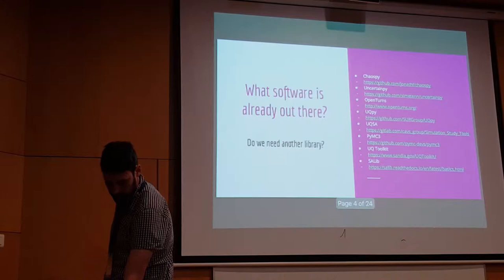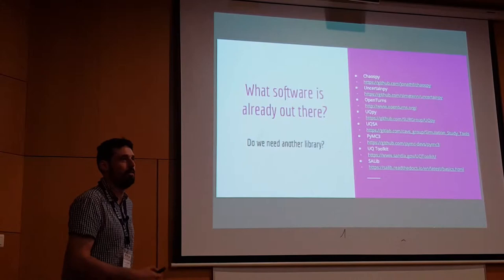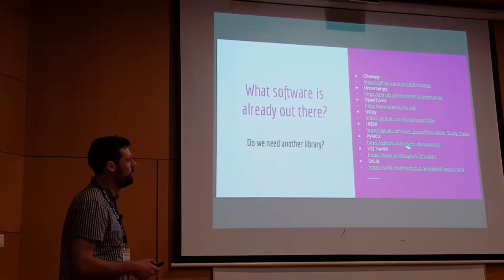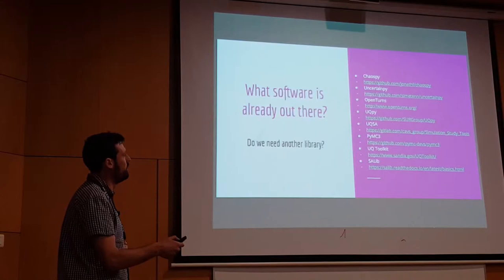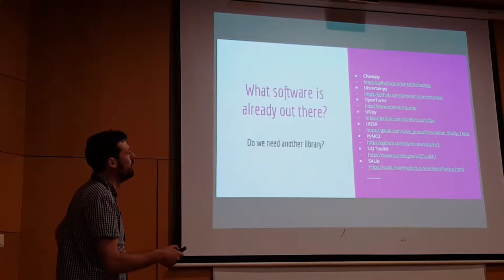Why do we need more? There are so many things out there. Uncertainty quantification is not new at all. I've listed a bunch of ones that we've looked at — I will have missed about 100, and I'm sure people can fill me in. Basically they all do different things. Some of these we actually use as dependencies to our libraries, such as chaospy and others like uncertainpy. We've been using some of the concepts from them.